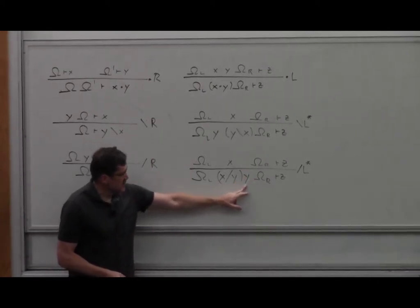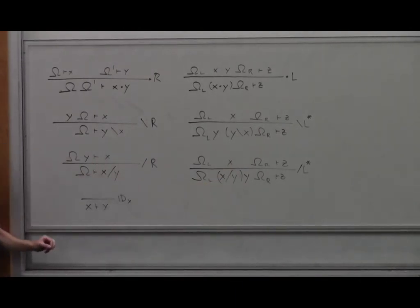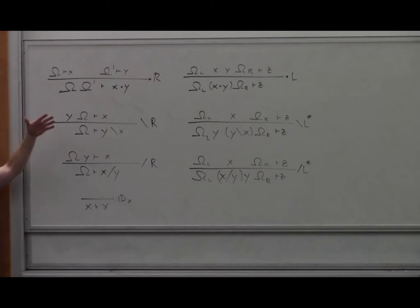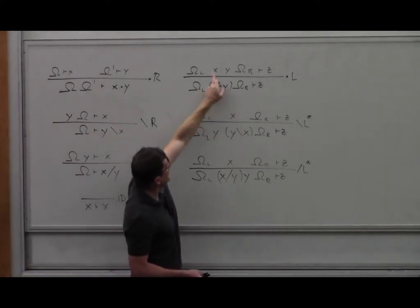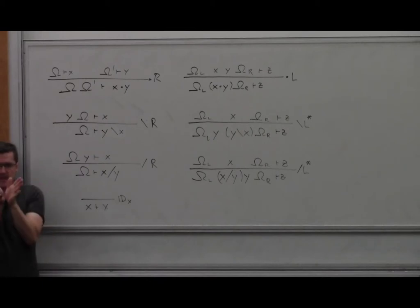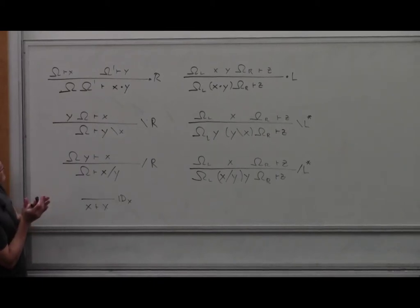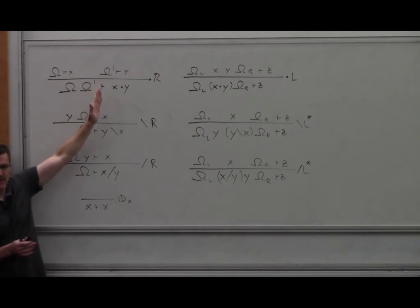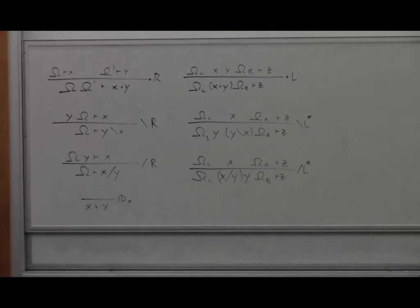For the over connective, the left rule says if I have x-over-y and a y next to it, I can use x. The right rule: to prove x-over-y, you put y to the right and get x. For fuse, the left rule breaks x fuse y into x and y separately. For the right rule, you divide your context — everything to the left goes to one premise and to the right goes to the other. With n assumptions, there are n+1 ways to split the context.